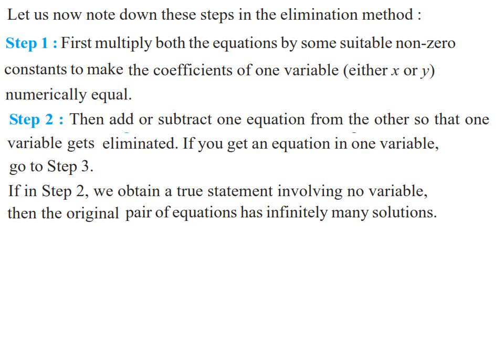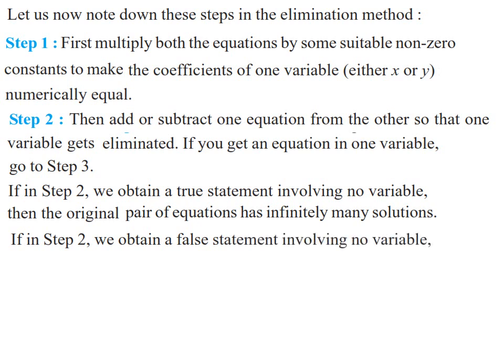Like 0 equals 0, 2 equals 2, 5 equals 5 — values not involving any variable x or y. But if instead we get a false statement like 3 equals 0 or 5 equals 0, which are non-true statements — then in step 2 we obtain a false statement like 2 equals 0 or 3 equals 0 involving no variable. In that case, the original pair of linear equations has no solution because they represent inconsistent or parallel lines.